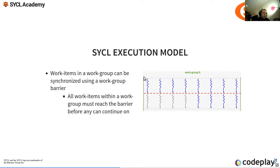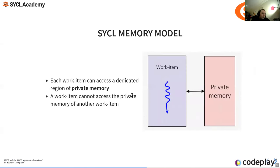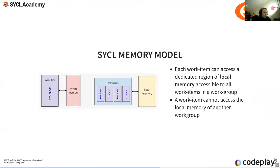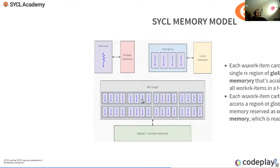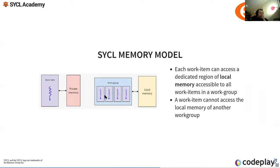Each work item has private memory, completely private to it — like a register. We also have local memory, which is shared across a work group. One work item can write to local memory and another can read it, but you must use a barrier to ensure the write has finished before the read happens.